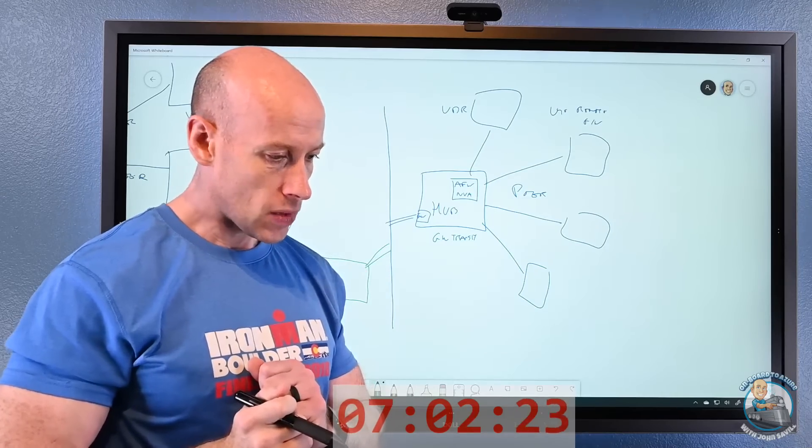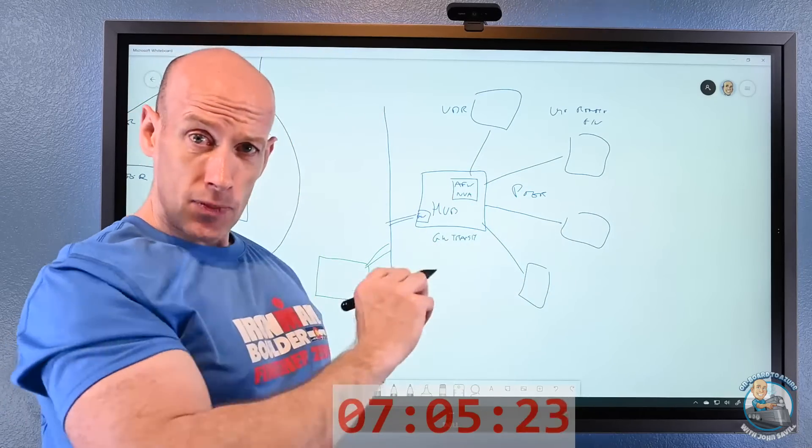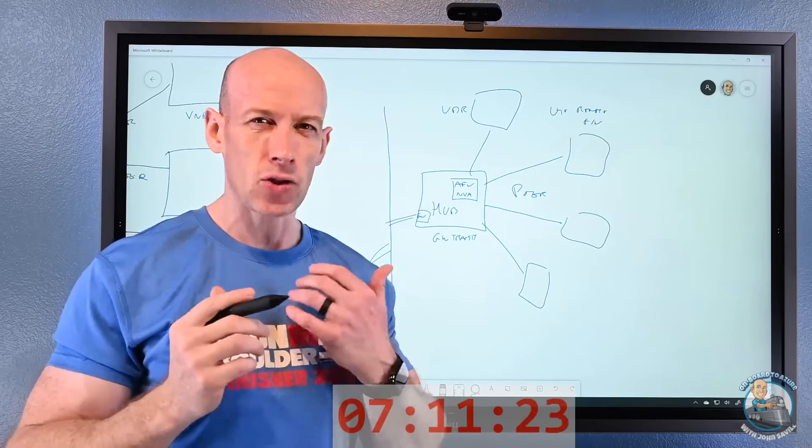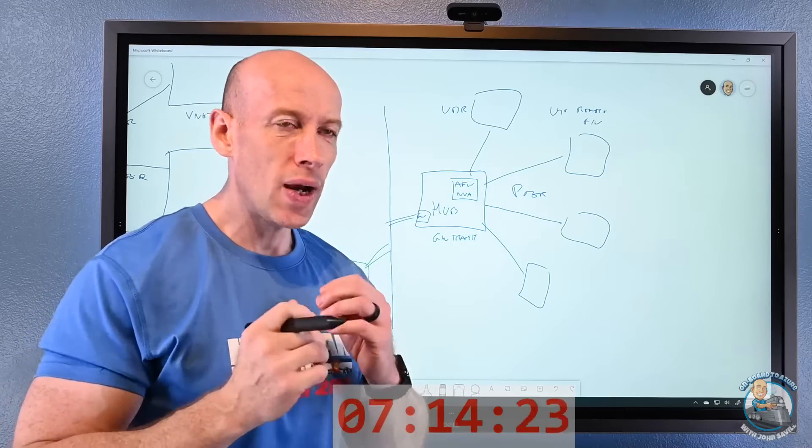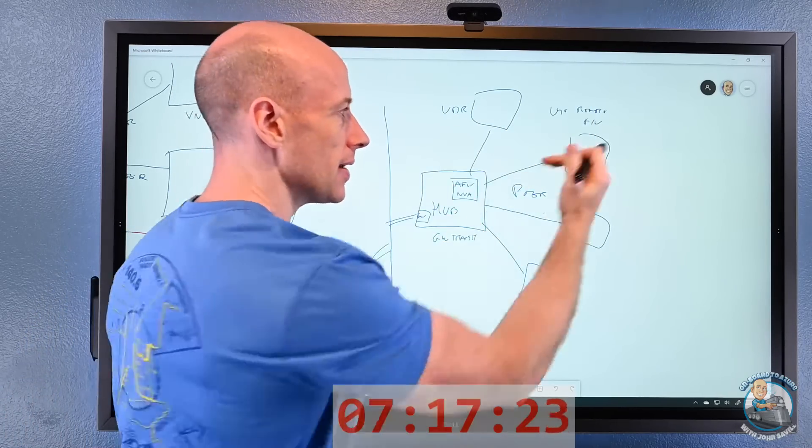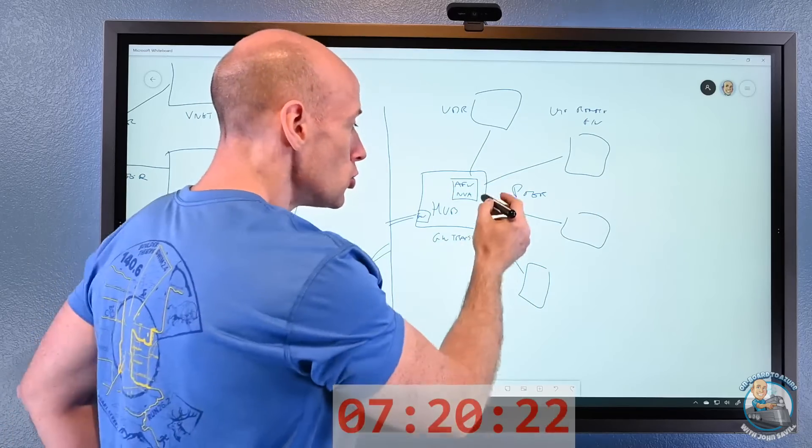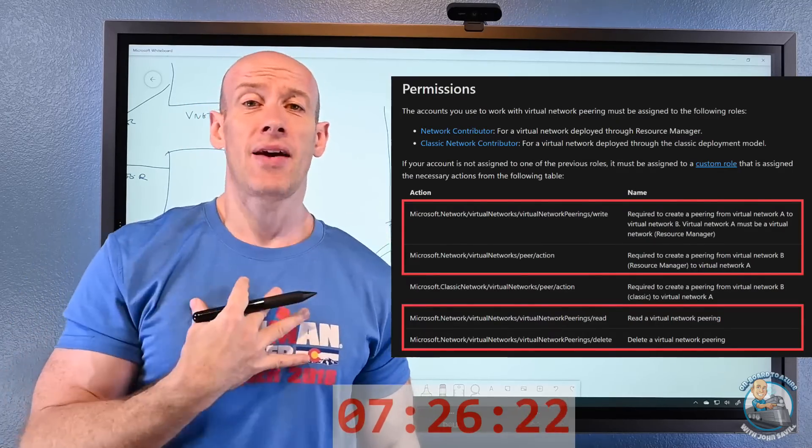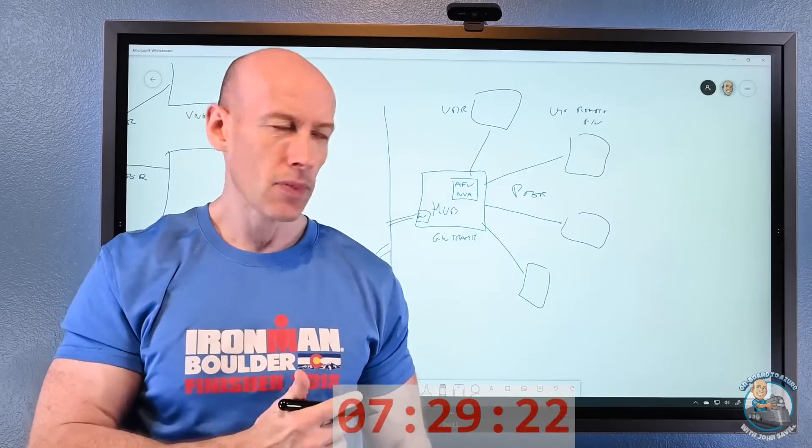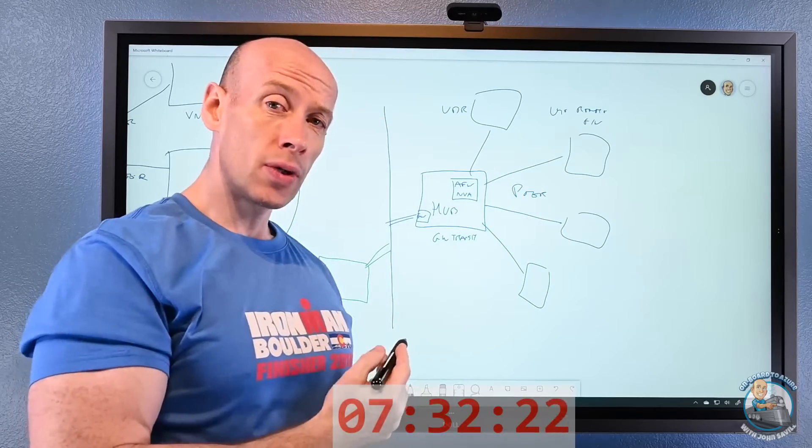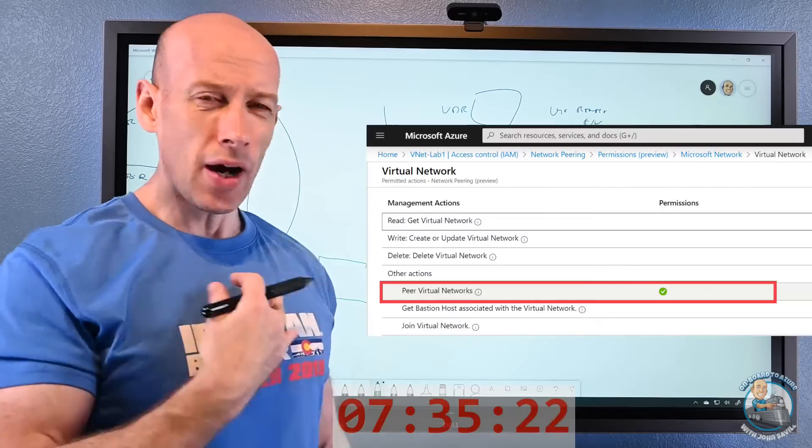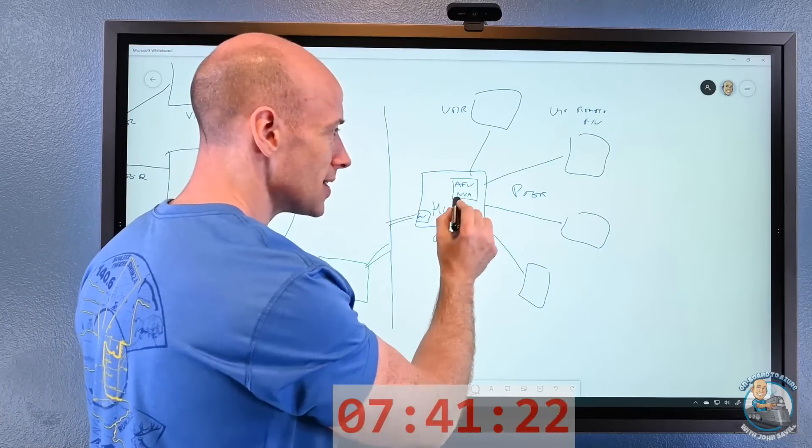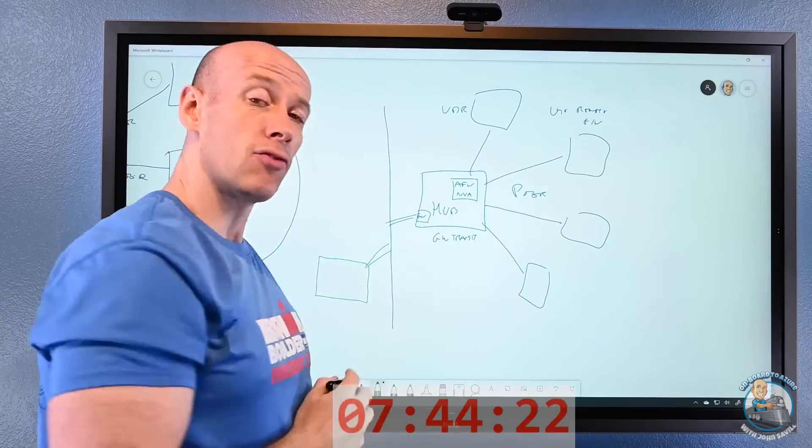I do want to point out permissions. To establish peering, you can almost think of it like creating two unidirectional peers. To create the peer on my end I have to be a network contributor—or there's really four permissions I have to have to manage it, and they're outlined in the Microsoft document. On the network I want to peer to, there is a peer action I have to have. So what I do is create a custom role that just has peer action and give that to the user that's establishing the peering in that direction on that target virtual network.